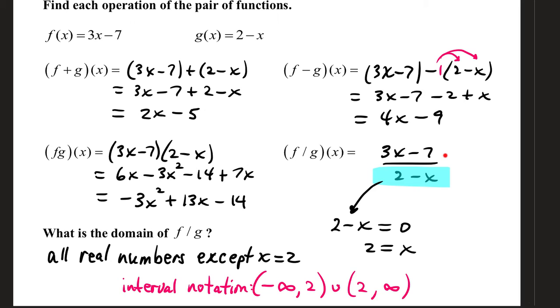For our rational function, f over g, 3x minus 7 over 2 minus x, again we don't really divide them out, we just stack them in a fraction.